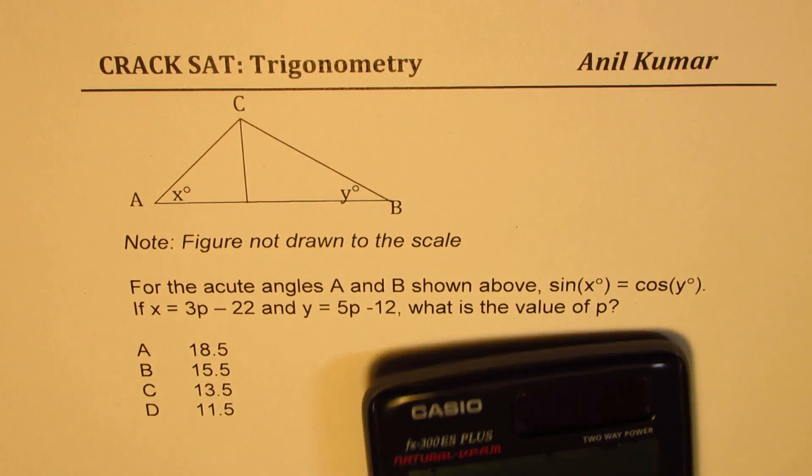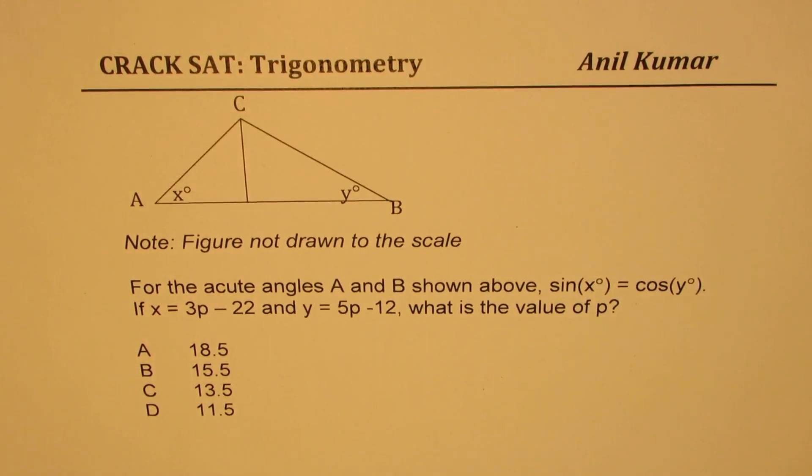Let's understand the question. We are given a triangle, the figure is not to scale. The question is: for the acute angles A and B shown above, sine of x degrees equals cosine of y degrees. If x equals 3p minus 22 and y equals 5p minus 12, what is the value of p?